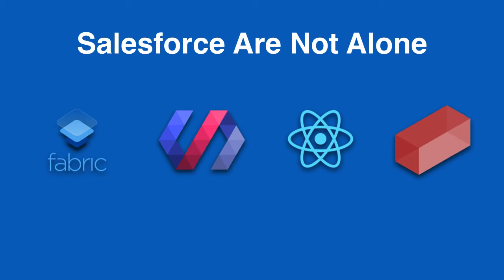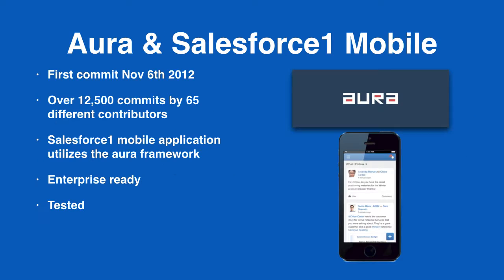When Salesforce first started working on Aura and on the Lightning framework, it was a long time before any of these had been released. In fact, the Aura framework, which powers the Lightning component system, was first started back in November 2012. You can go onto GitHub and there's a public repository which contains all of the Aura framework. Since 2012, there have been over 12,500 commits by a bunch of different contributors, which is why Salesforce had to build their own framework — when they first started looking at this, there wasn't any mobile framework development system out there that would work in an enterprise scalable way.